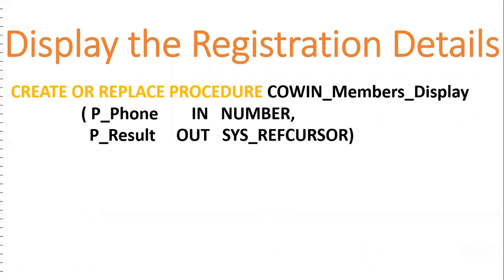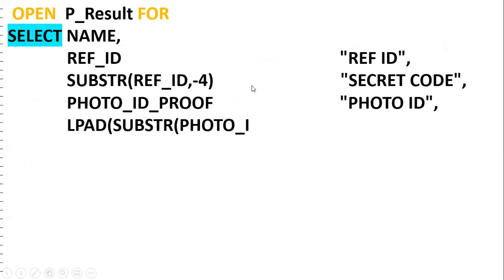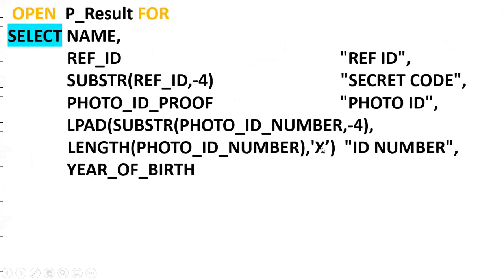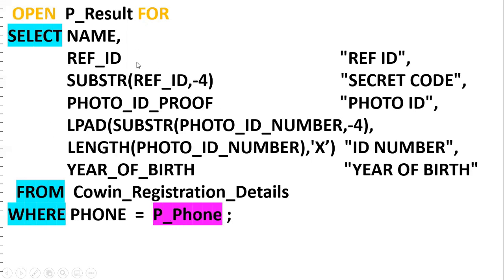The input is the phone number, and the output is a SYS_REFCURSOR. A SYS_REFCURSOR is a system-defined dynamic ref cursor that allows us to store and send results to the front end. We open the SYS_REFCURSOR variable with a SELECT query. The column 'Ref ID' uses a column alias — if the alias has spaces, it must be enclosed in double quotes. We use SUBSTR(ref_id, -4) to get the last four characters. The photo ID number is masked: we extract the last four digits and replace the remaining characters with 'X' using LPAD for security purposes. The table is covin_registration_details and the filter is based on p_phone.